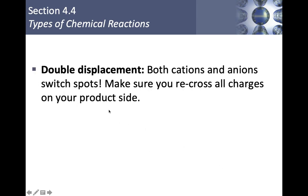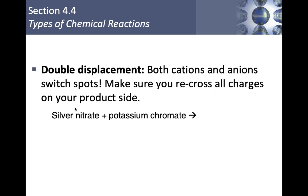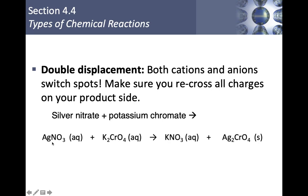Double displacement reactions — really what this unit is about — involve both cations and anions switching spots. Make sure to recross all charges on the product side. For example, silver nitrate (AgNO₃) plus potassium chromate (K₂CrO₄): silver pushes potassium out. Products are potassium nitrate (KNO₃, aqueous) and silver chromate (Ag₂CrO₄, solid). Balance by putting a 2 in front of AgNO₃ and KNO₃.